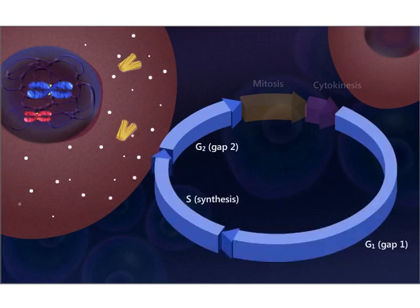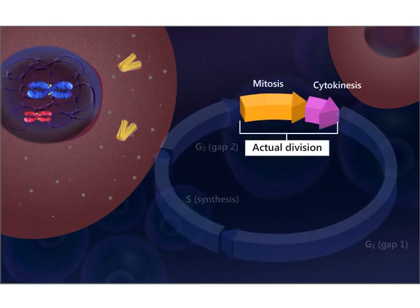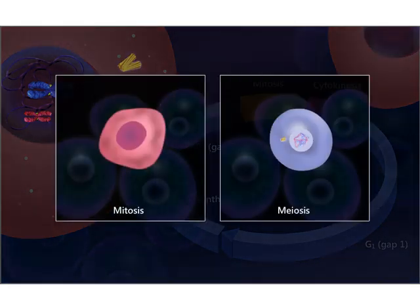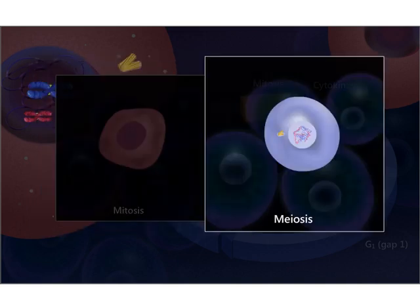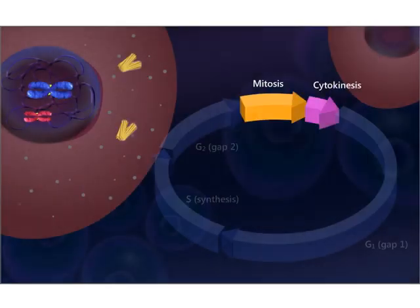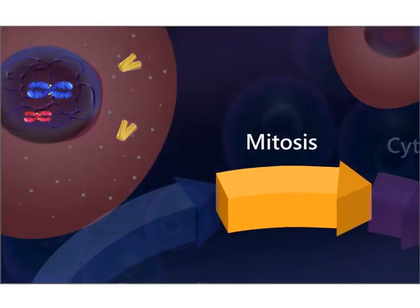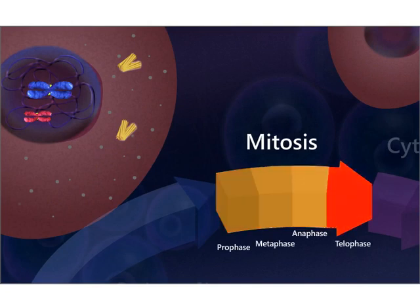The cells spend a great deal of time during interphase and a very short period of time in actual division. There are two types of cell division: mitosis and meiosis. Generally, mitotic cell division takes place in vegetative cells. Mitosis consists of four phases: prophase, metaphase, anaphase, and telophase.